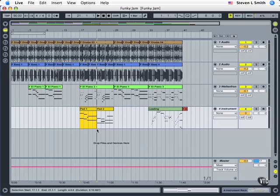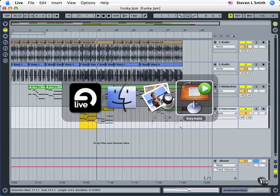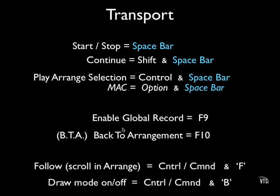This is very helpful if you're trying to find a specific spot. Going back to our Keynote presentation: to enable global record, simply press F9. And to take us back to our arrangement, simply press F10.